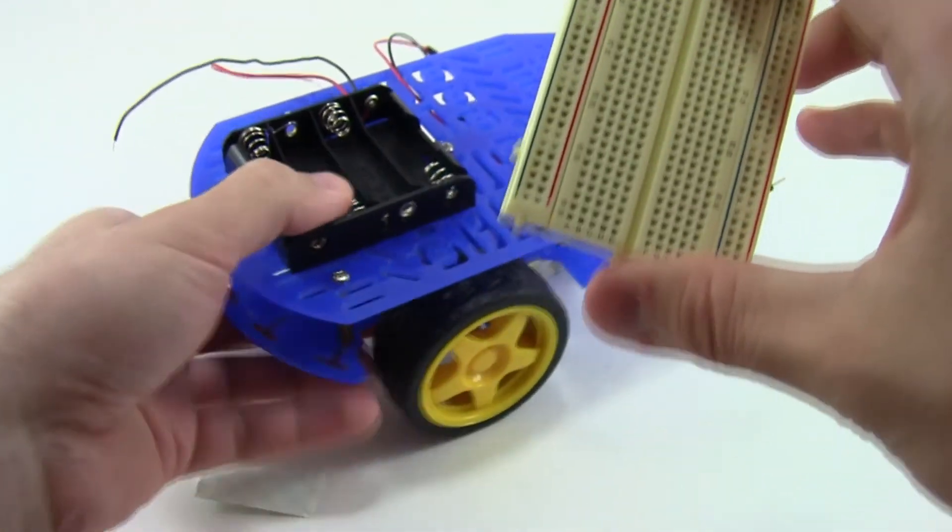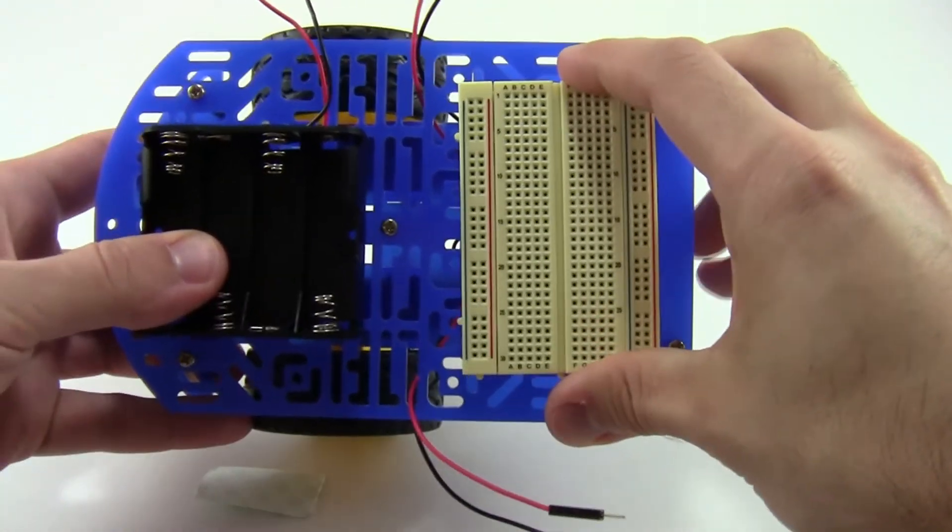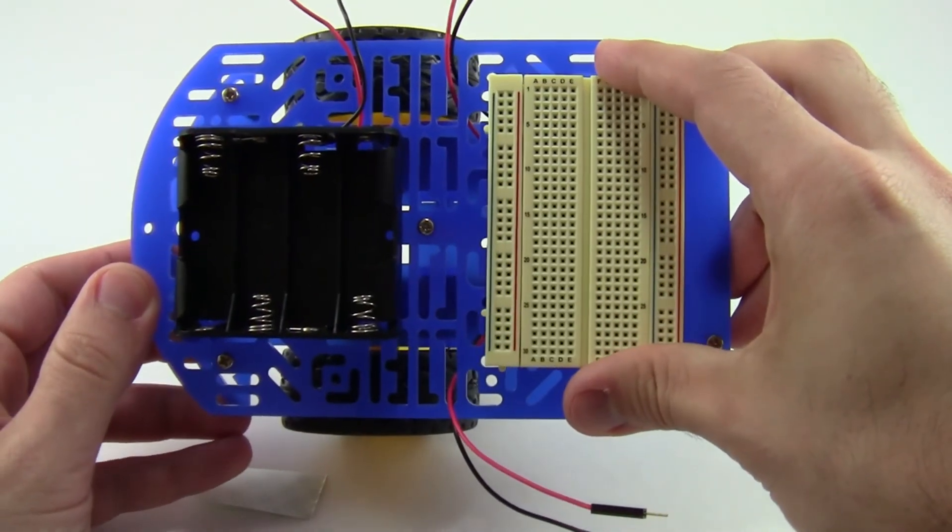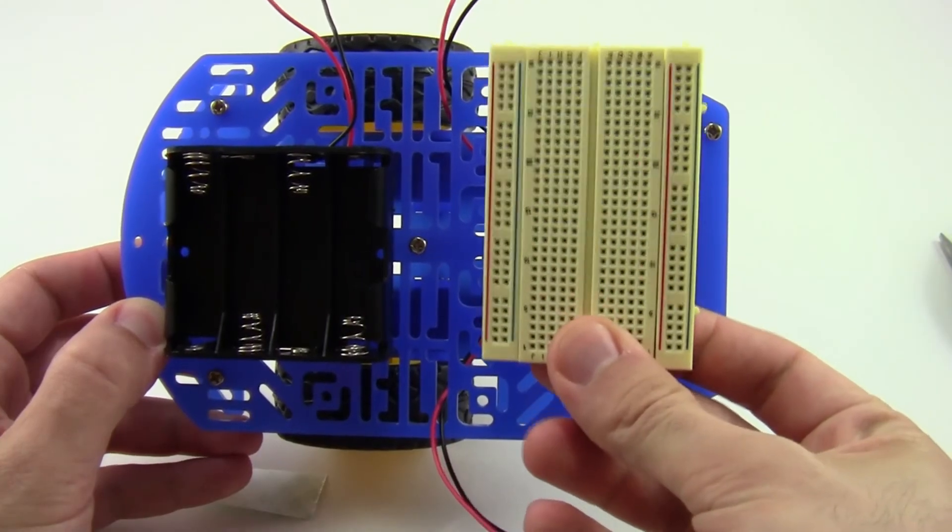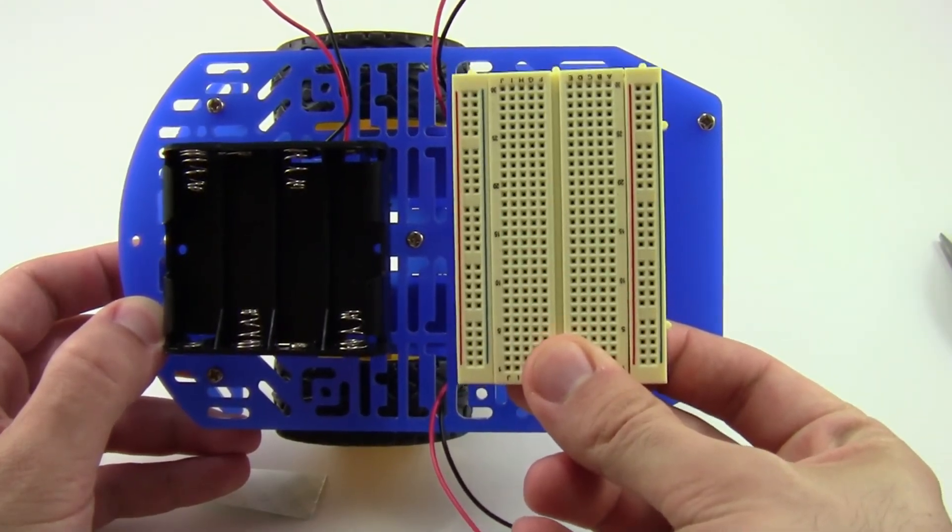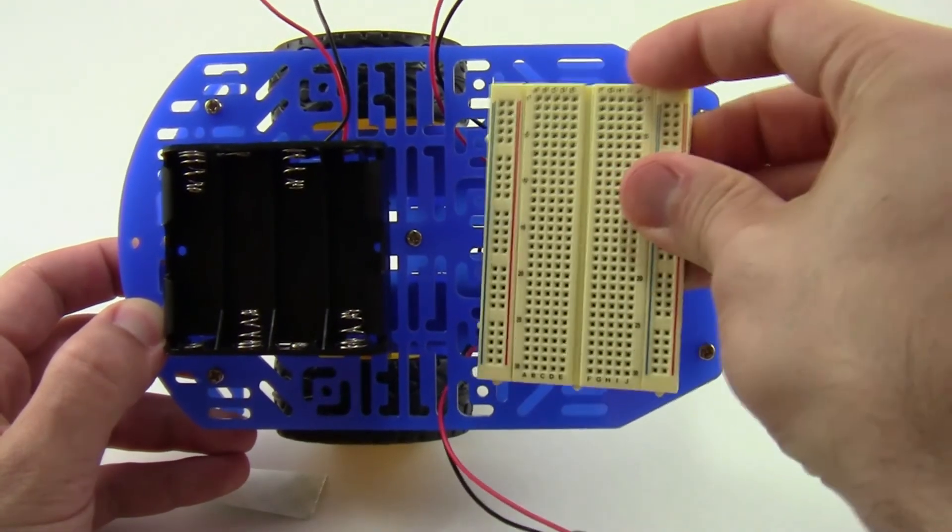For now, you just want to make sure that writing is right side up. When you're holding the chassis with the curved part on your left, you want to make sure you can read the writing and that your breadboard isn't upside down, and that'll make sure that it matches our directions later in the project.